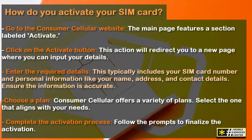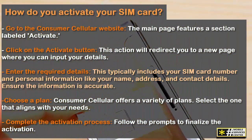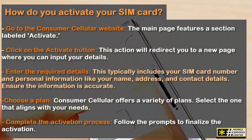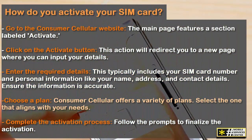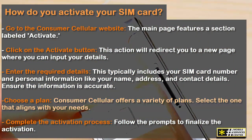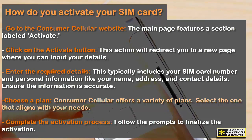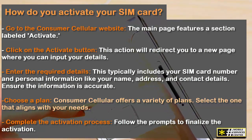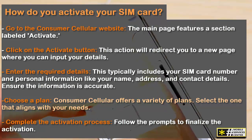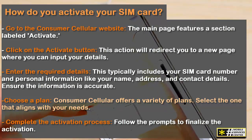Enter the required details. This typically includes your SIM card number and personal information like your name, address, and contact details. Ensure the information is accurate. Consumer Cellular offers a variety of plans — select the one that aligns with your needs.